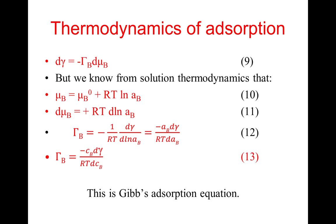Consequently, dγ = -Γ_B dμ_B. But we know from solution thermodynamics that μ_B = μ_B° + RT ln a_B, equation 10. Therefore, dμ_B would be equal to RT d ln a_B, equation 11. Γ_B then becomes -1/(RT) × dγ/d ln a_B, which is equal to -a_B/(RT) × dγ/da_B.